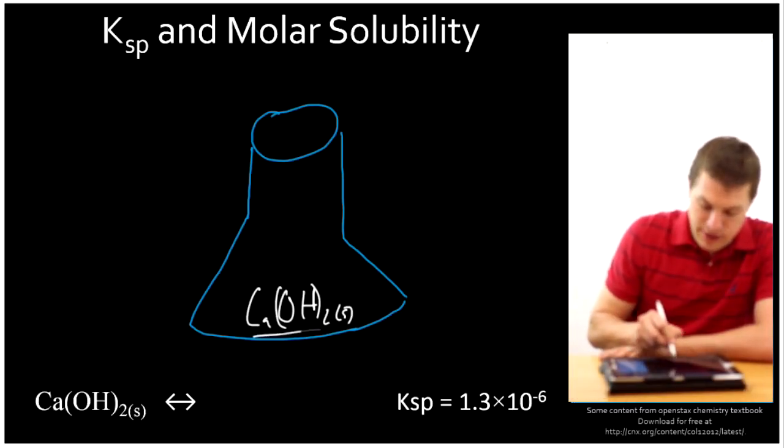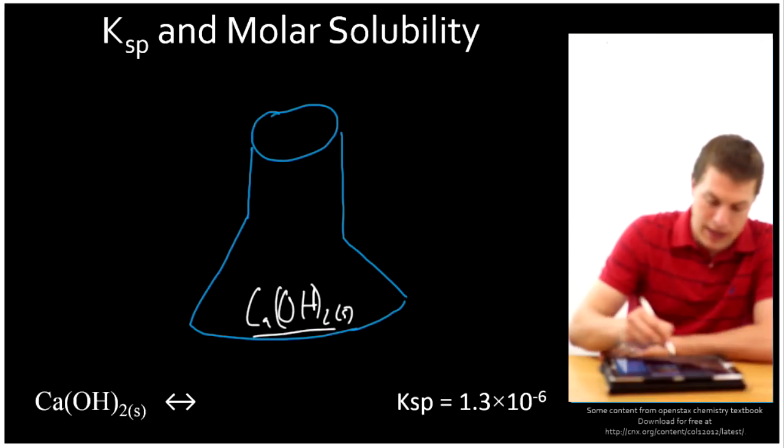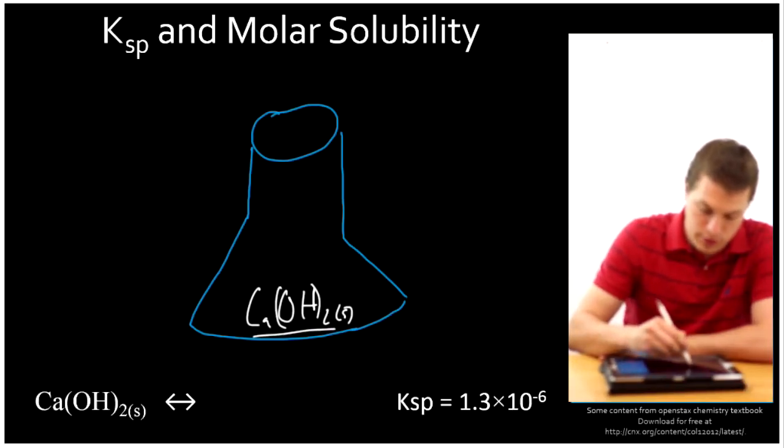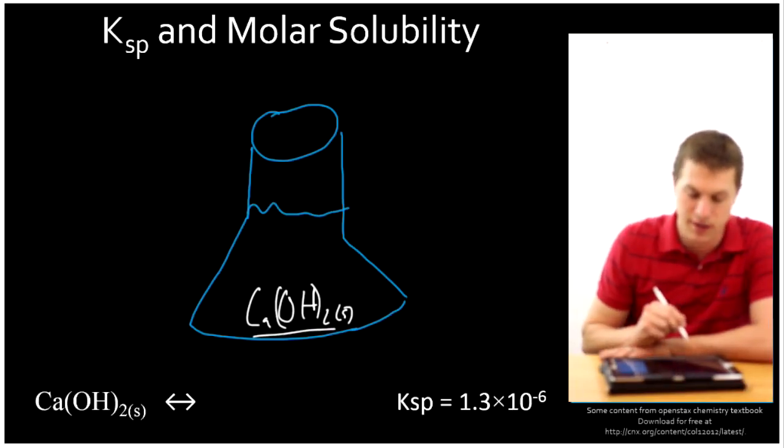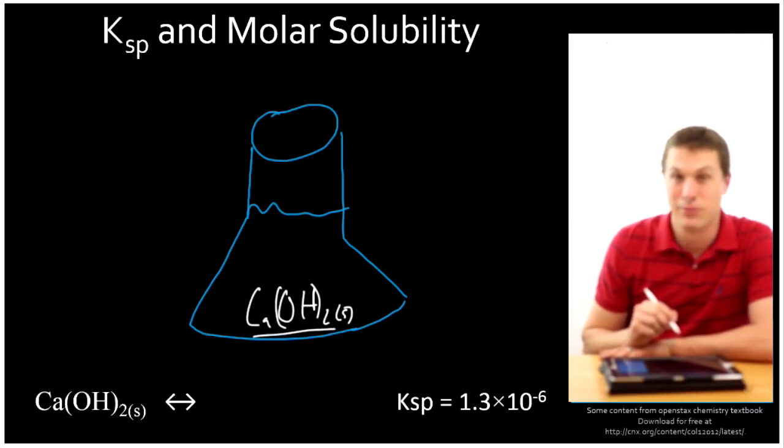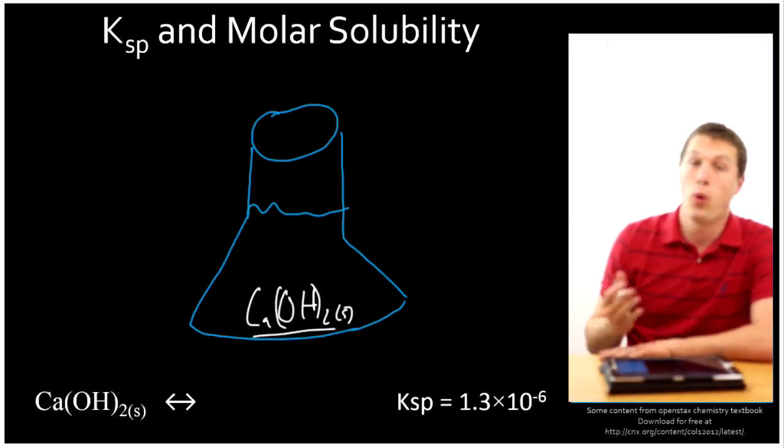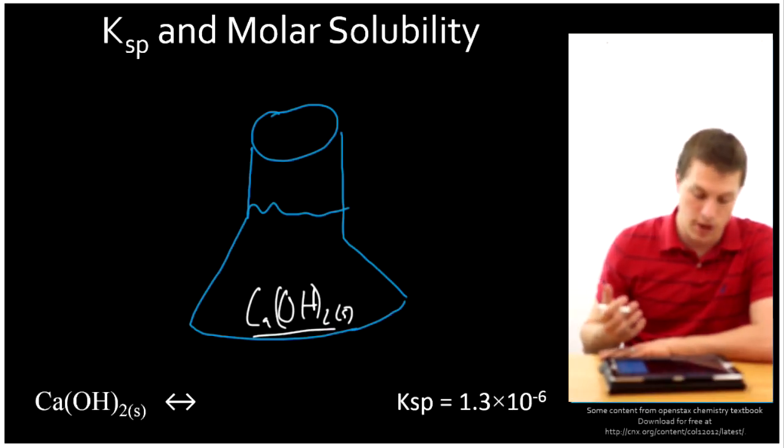So in this case we can see that we have calcium hydroxide as a solid at the bottom of some water. So this is full of water and we got our calcium hydroxide. Please don't make fun of how poorly my flask is drawn. I'm not a real good drawer. But anyway, the question is, my calcium hydroxide splits apart and we want to know what portion of it splits apart. How much can dissolve? And that's the question that KSP answers for us.